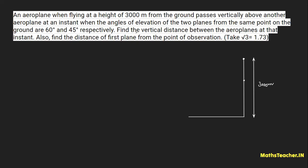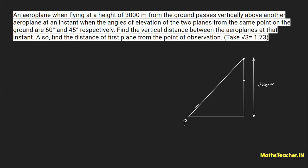Let me draw the angles of elevation from the same point on the ground — let's call it point P. This is the position of the first aeroplane and this is the position of the second aeroplane. The bigger angle from P to the first (higher) aeroplane is 60 degrees, and the smaller angle to the second (lower) aeroplane is 45 degrees.